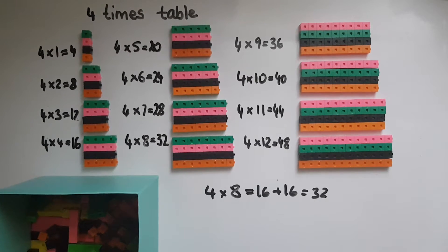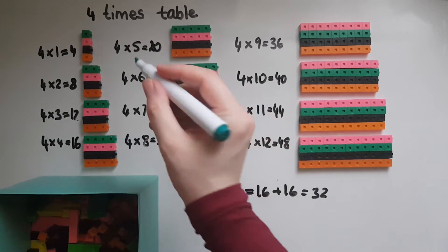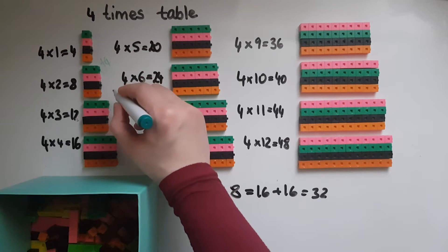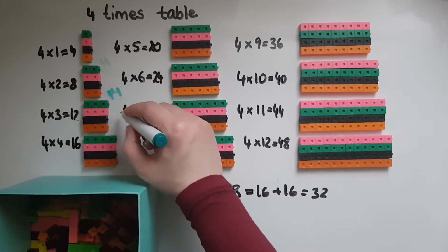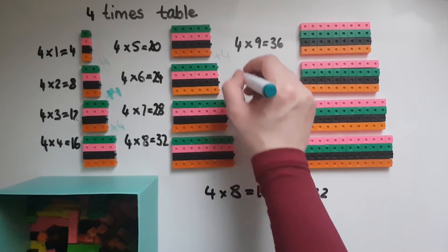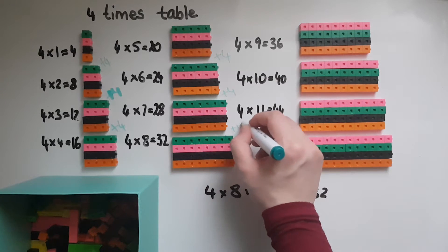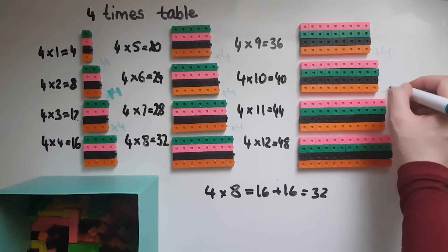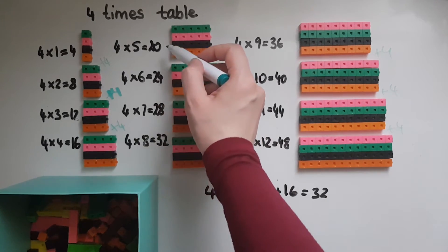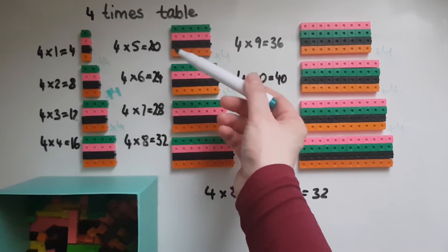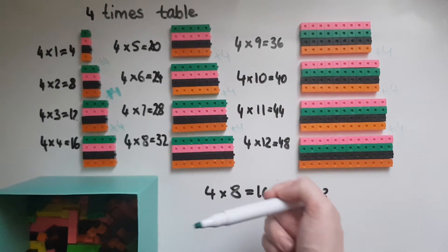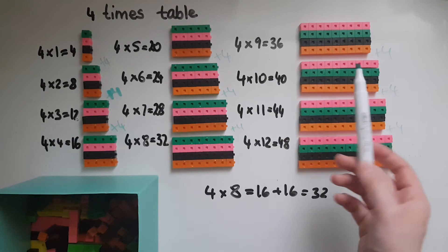Another strategy links to the pattern. To get from four to eight, we add four. To get to twelve, we add another four, and to sixteen we add four again. So if you know that four times five is twenty, to get to four times six you add another four, giving twenty-four. Add another four and that gives us four times seven equals twenty-eight.